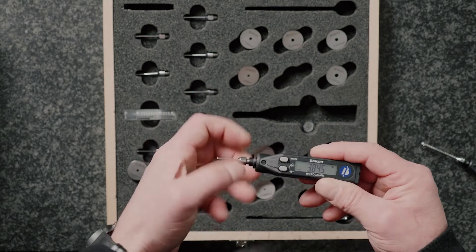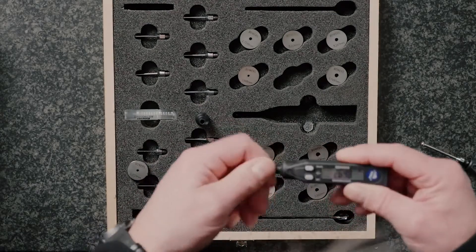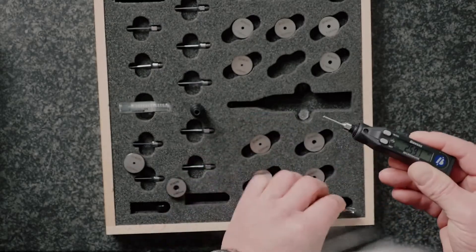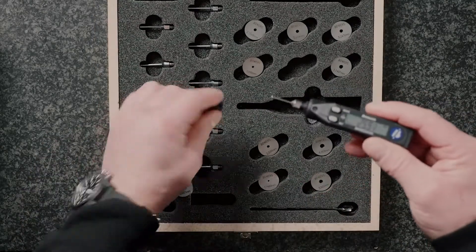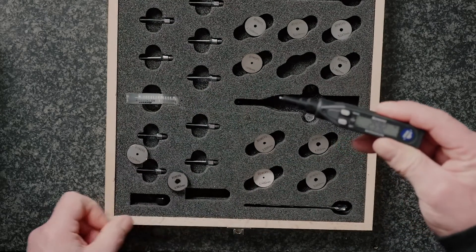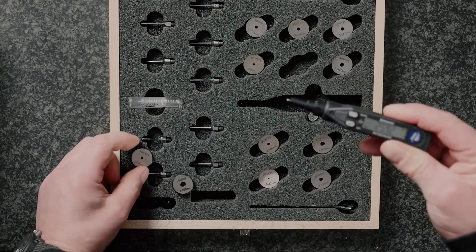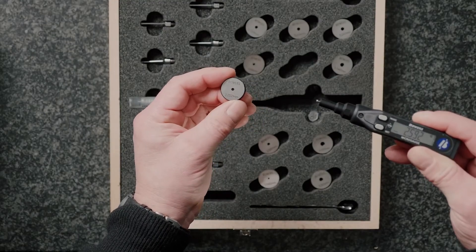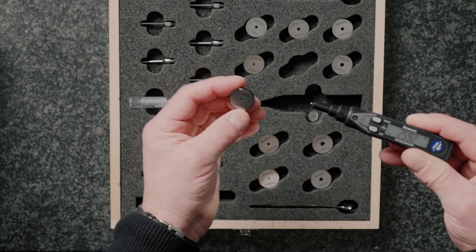I'm just going to assemble that on, lock that into position and I'm going to use the depth stop that's supplied with the gauge to ensure that I get a nice square entry onto the setting ring. Here's my setting ring as part of the kit, 2.25 millimeters.